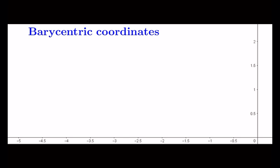While Cartesian coordinates are based on two perpendicular lines, the barycentric coordinates are based on a triangle.